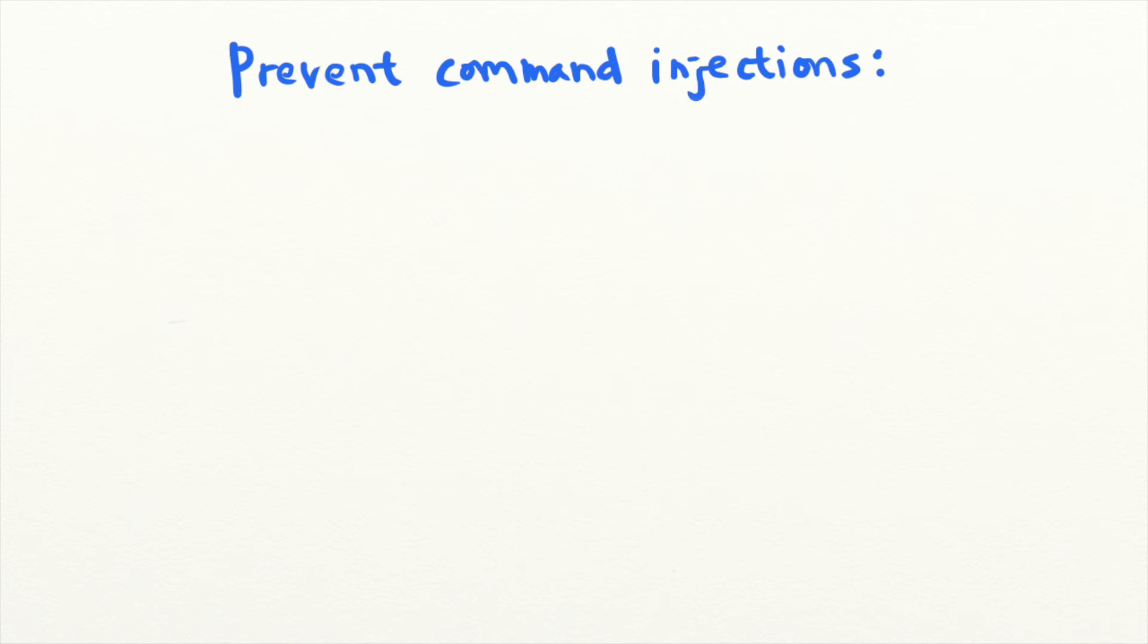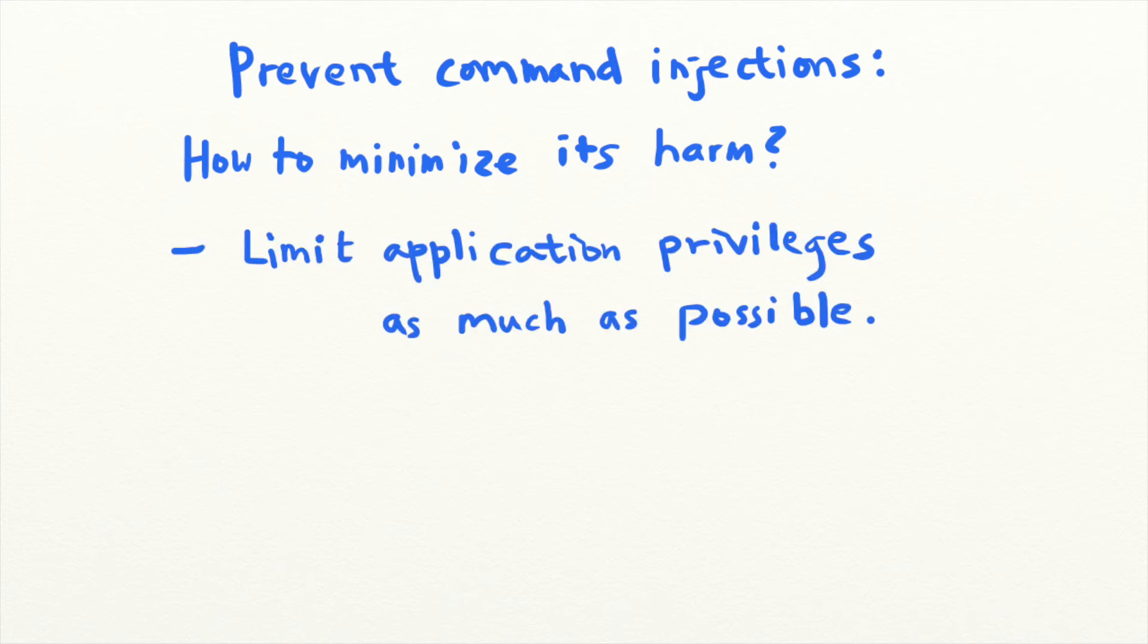If all else fails and an attacker does achieve command injection on your machine, what can you do to minimize the harm that they can cause? Being able to run arbitrary commands on a system means having almost full access to that application's permissions. So if you limit what your applications can do on your system, a single command injection using that application will not be able to cause serious harm.